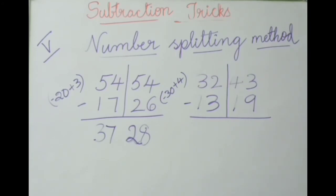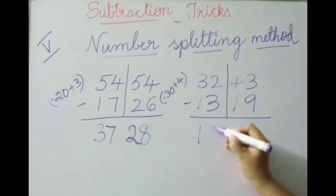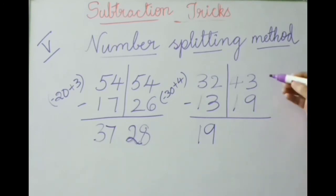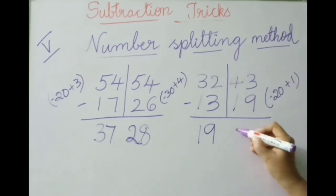See the next example: three thousand two hundred forty-three minus one thousand three hundred nineteen. Split as 32|43 minus 13|19. For 32 minus 13: write 13 as minus 20 plus 7 — thirty-two minus twenty is twelve, plus seven is nineteen. For 43 minus 19: write 19 as minus 20 plus 1 — forty-three minus twenty is twenty-three, plus one is twenty-four. Total answer is 1924.